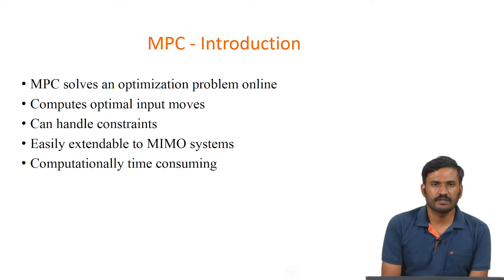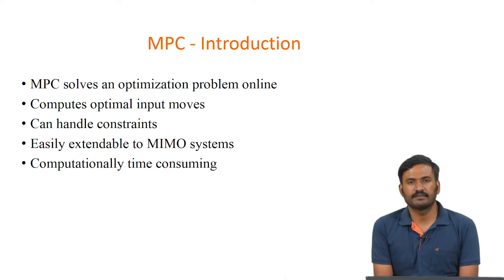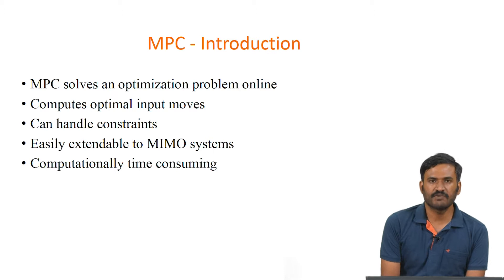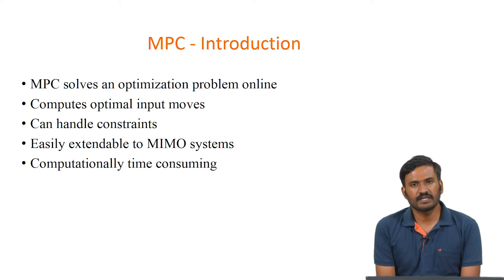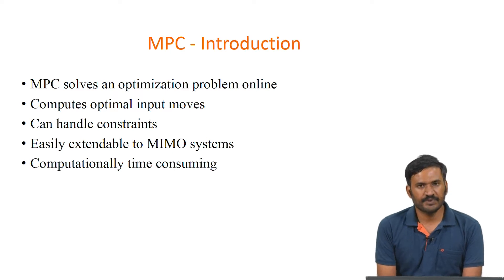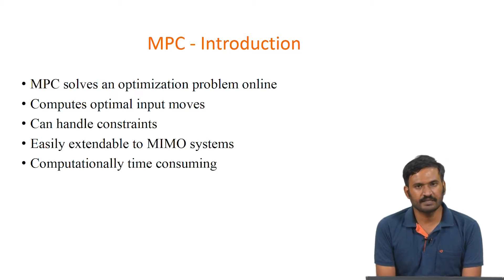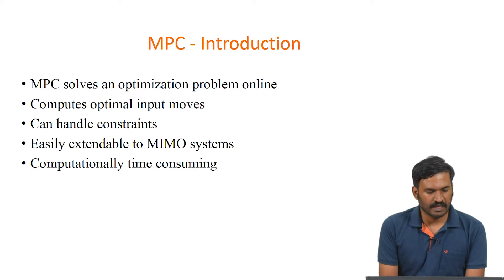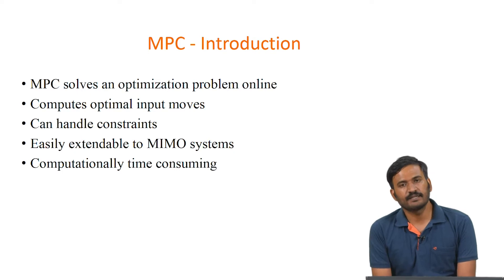The model predictive controller is a controller which solves an optimization problem online. The optimization problem is formulated such that the MPC uses a model and it can be easily solved. Most of the time we solve a quadratic program optimization. It computes optimal input moves which are optimal in the sense of the objective function we have chosen. Since this is an optimization problem, it can handle constraints easily, and it is easily extendable to MIMO systems.